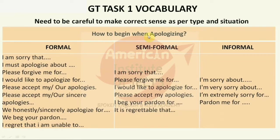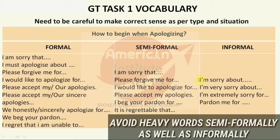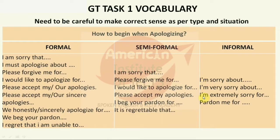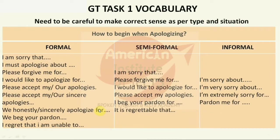The first category is how to begin when apologizing or feeling sorry. We do not use heavy vocabulary in semi-formal or informal conditions. We also use contractions and short forms in informal conditions. 'We beg your pardon' is used when writing on behalf of your organization; otherwise 'I beg your pardon.' You can say 'I regret that I am unable to' or 'We regret that we are unable to process' — that way you can apologize.